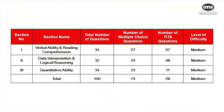Taking a brief overview of the test in the second slot: the test was divided into three sections. The first section was Verbal Ability and Reading Comprehension with 34 questions — 27 MCQs and 7 non-MCQs (TITA questions). The overall difficulty of VARC was medium. The second section, Data Interpretation and Logical Reasoning, had 32 questions — 24 MCQs and 8 TITA. The third section, Quantitative Ability, had 34 questions — 23 MCQs and 11 TITA. DI-LR and QA were both medium difficulty. In all, CAT had 100 questions: 74 MCQs and 26 TITA questions.